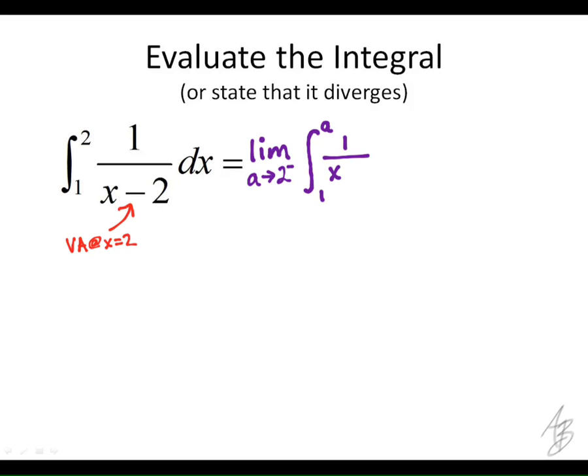When we do that, we're going to write it as a limit. And notice that I wrote it that we're approaching 2 from the left. Since we're going from 1 to 2, we're going to approach 2 from the left. So we have this vertical asymptote that we're going to approach from the left.